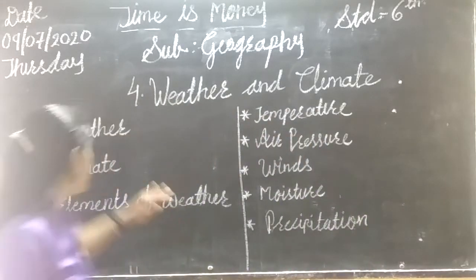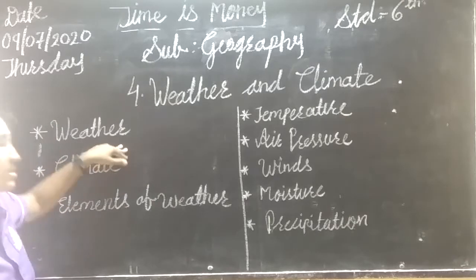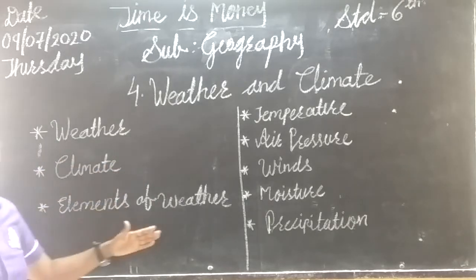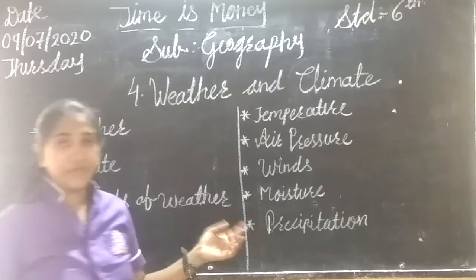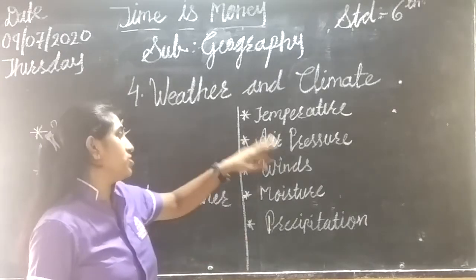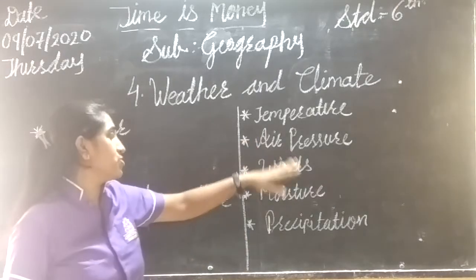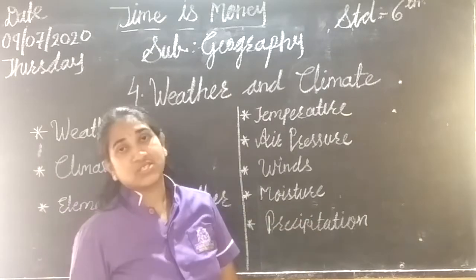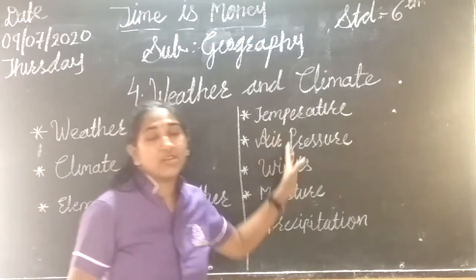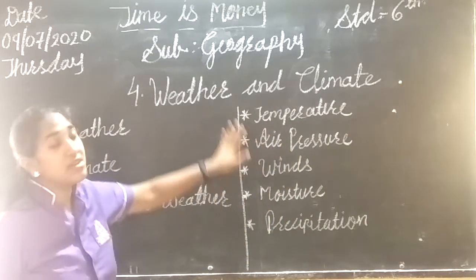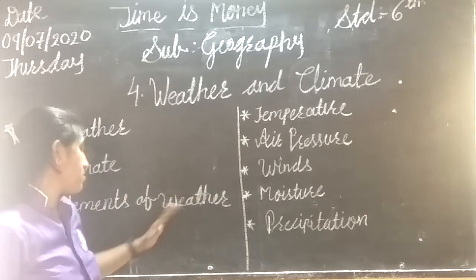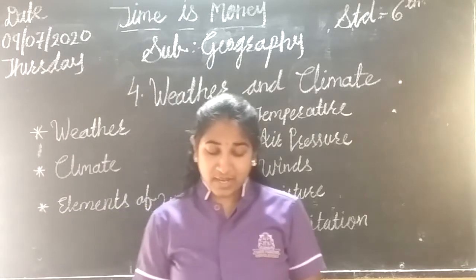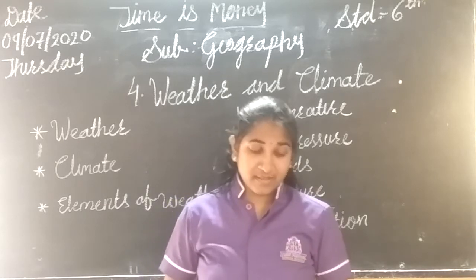In this lesson we are going to study first tropical weather, then about the climate, then elements of weather - which are the elements of weather. These are the temperature, air pressure, winds, moisture and precipitation. These are the elements of weather. Now we start our lesson, page number 19.